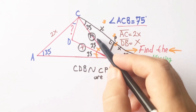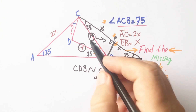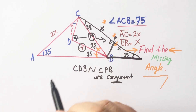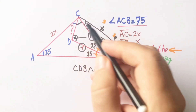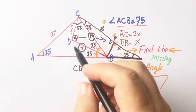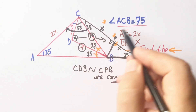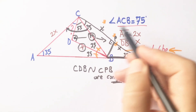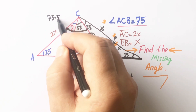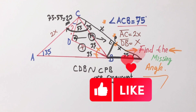Therefore the angle across is 90 degrees, so this angle must be 90 degrees. With 90 degrees and 35 degrees, here must be 55 degrees. We know that this angle is 75 degrees, therefore the missing angle is going to be 20 degrees.